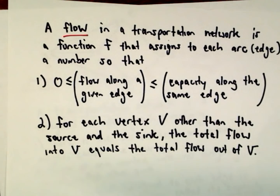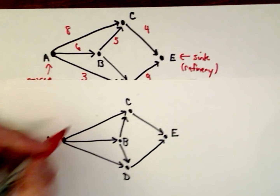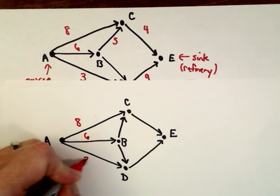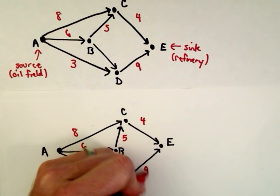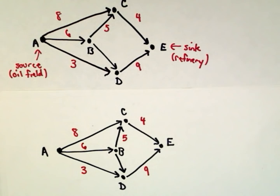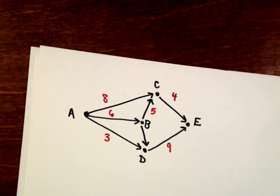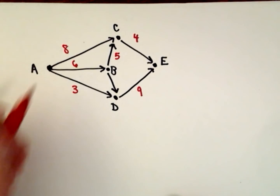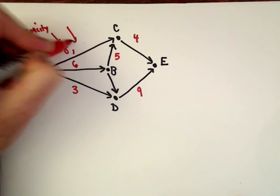Let's look at an example. We had a capacity of 8, 6, 3, 5, 4, and 9. Now we're going to assign two numbers to each arc — the first number is going to be the capacity, and I'm going to assign another number representing the flow. These aren't totally arbitrary, but nothing special about these particular numbers — you could certainly use other ones.